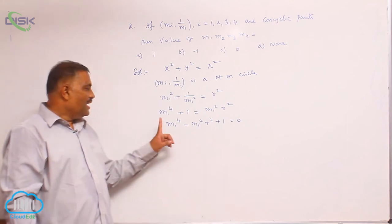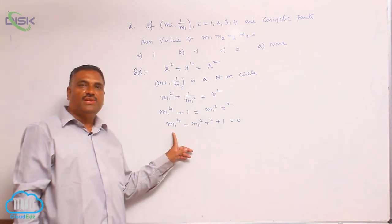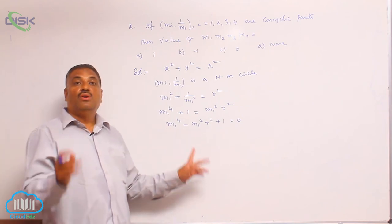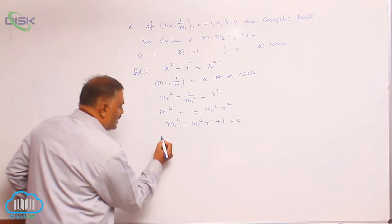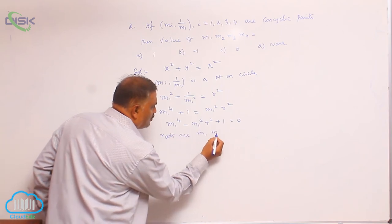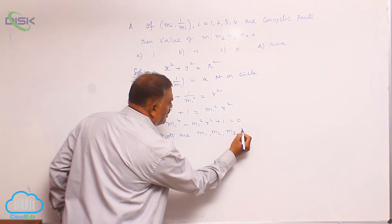You observe that it is a biquadratic equation, that means fourth degree equation. Definitely it will have four roots. The roots are m1, m2, m3, m4.